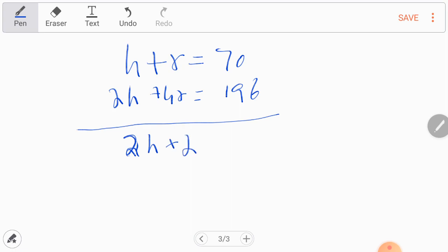If I solve this, h plus r equals 70, and 2h plus 4r equals 196. I should multiply by 2 to the first equation. I am solving below. 2h plus 2r equals 140 and 2h plus 4r equals 196.